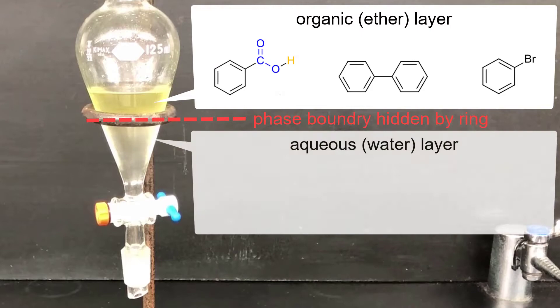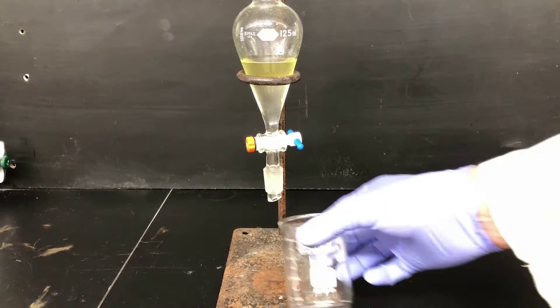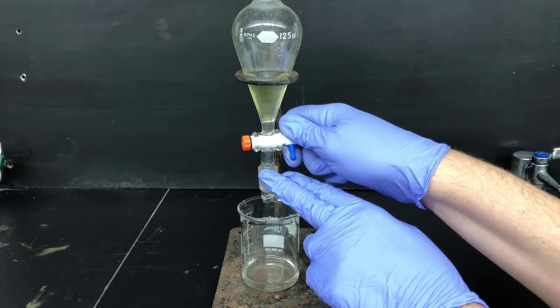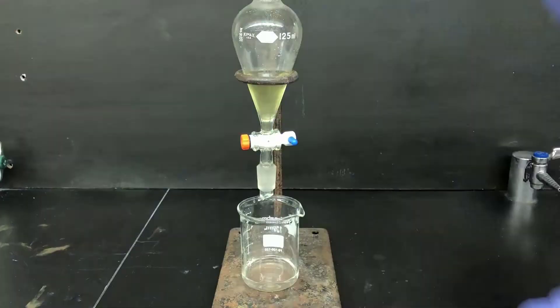Now I'll drain the aqueous layer out the bottom and discard it. That'll leave the organic layer in the separatory funnel, which contains the desired benzoic acid along with the organic soluble impurities. Keeping the layers straight in this experiment is a particular challenge, so to make sure I don't make a mistake and throw away the wrong layer, I'm going to label this container as aqueous waste.